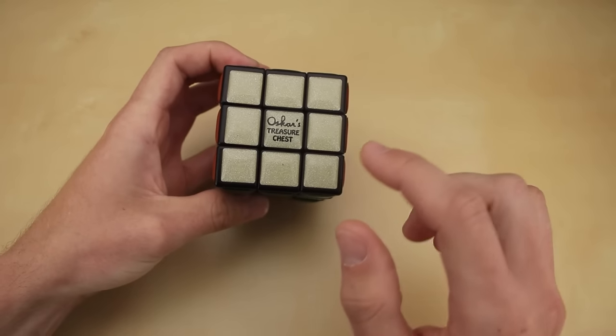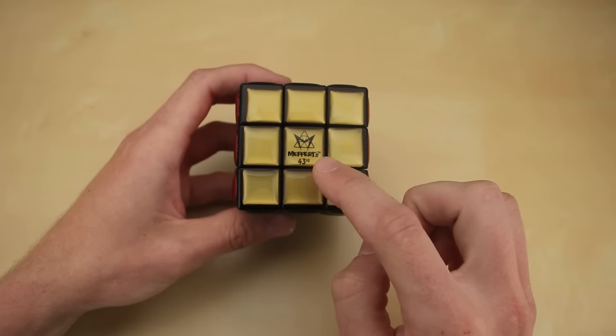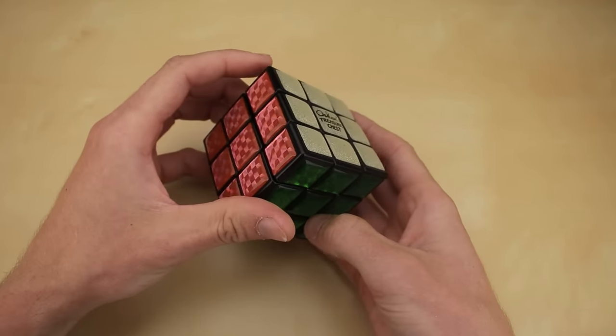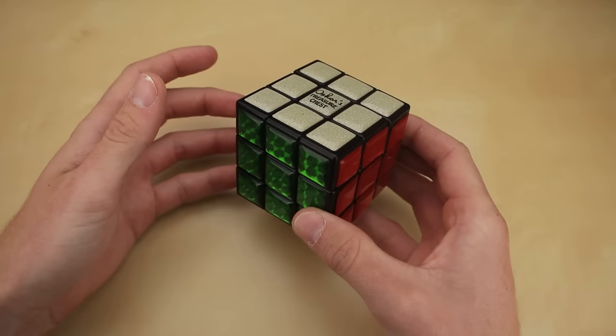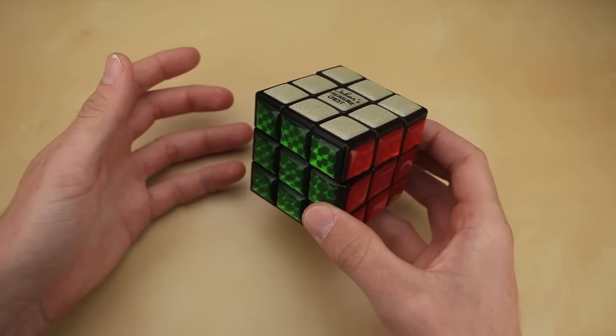The only problem is that this Oscar's treasure chest is very sentimental for me. I got it over 8 years ago, it's the special Mefferts Anniversary Edition with the cool stickers, and there is no way that I'm going to be modifying this just for a video. Now I could have just planned ahead and bought another one, but since that didn't happen, we're going to do it the hard way instead.